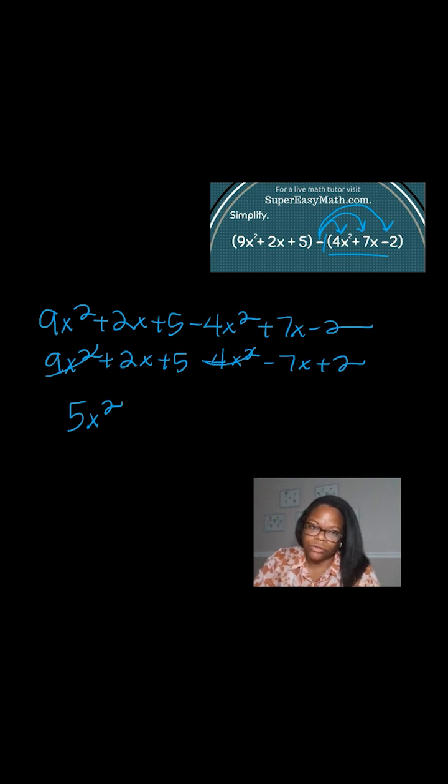Now I got positive 2x and then I have a minus 7x. So I know that's going to be a negative 5x right here. So I'm going to cross this off.